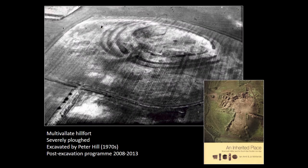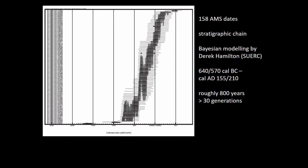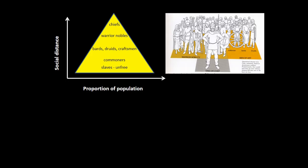The major excavated site is Broxmouth, which was dug by Peter Hill in the 1970s and published by myself and my team at the University of Bradford a few years ago. One of the important things about Broxmouth was to show that when you take one of these settlements apart, the multi-vallate hillfort element is just one part of the sequence. From 158 radiocarbon dates, we can see continuity from around 650 BC through to around 150 AD, when this site and the whole associated settlement pattern seems to disappear.